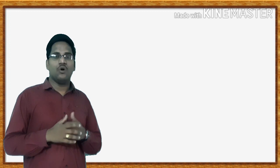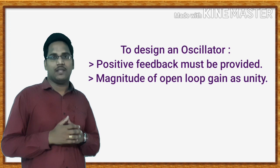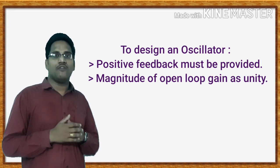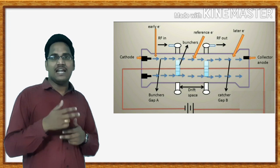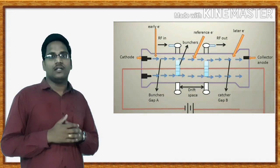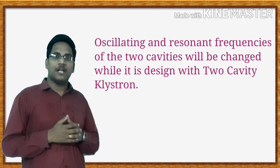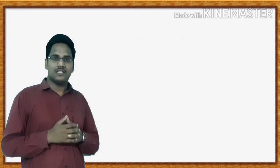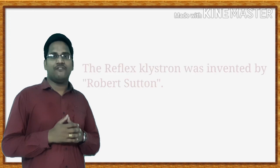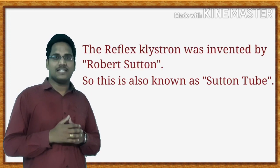As we know, to design an oscillator, positive feedback must be provided to the input in a way to have a magnitude of loop gain as unity. So if we design a Klystron oscillator using a two-cavity Klystron, we have to change the oscillating frequency and resonant frequency of the two cavities, thereby leading to difficulties in generating oscillations. Thus, to overcome this problem, a Reflex Klystron was introduced.